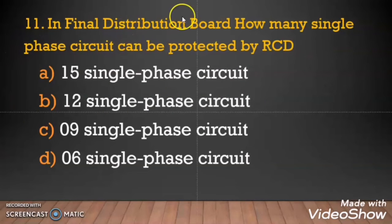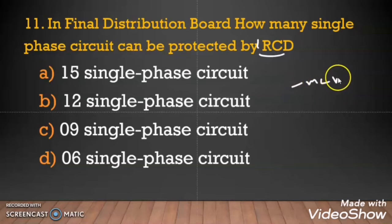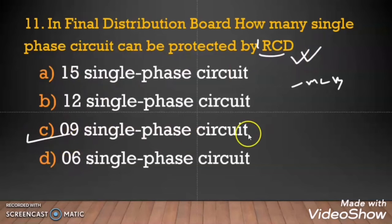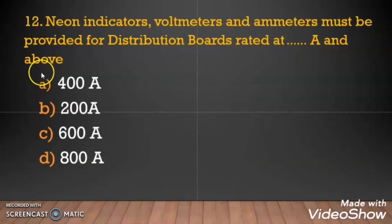Question 11: In a final distribution board, how many single phase circuits can be protected by 1 RCD? As per ADDC regulation, a maximum of 9 MCBs — meaning 9 single phase circuits — are allowed to be controlled by 1 RCD. So option C is correct.